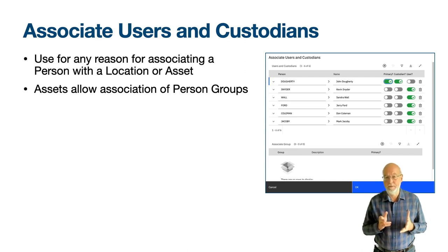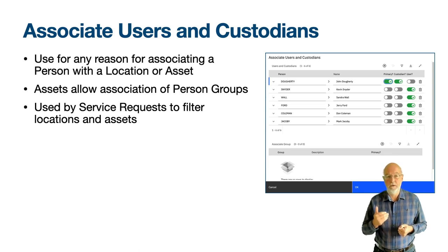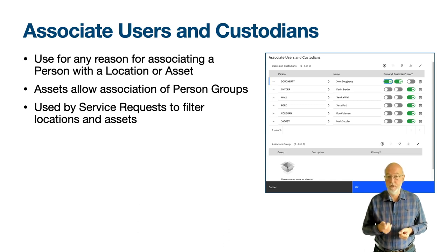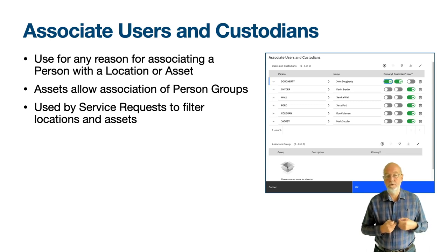The main place in Maximo where this feature is used is in the service request application, where the default filter on a location or asset field is where the affected user is a user or custodian of the location or assets. On the self-service service request application, the location and asset fields show the locations and assets for which the affected user has been associated — normally the person who is logged in — making it easy for end users to select the right location or asset.